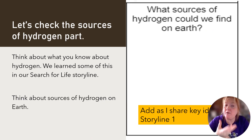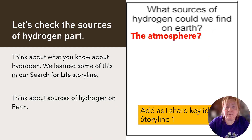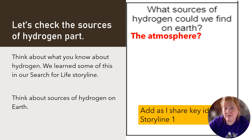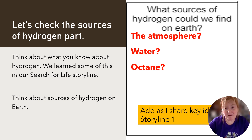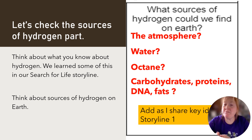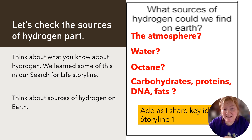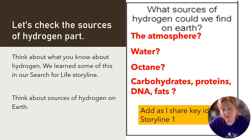Now, what about sources of hydrogen? Maybe we could get hydrogen from the atmosphere, maybe from water, maybe from octane. There are a lot of options — maybe from carbohydrates, proteins, DNA, and fats. Maybe there's a way to get hydrogen from all of those places.